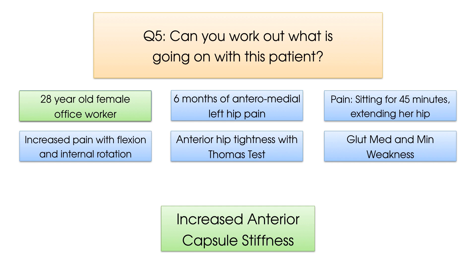Furthermore, weakness in the gluteus medius and minimus muscles can lead to an increase in hip internal rotation, which can also cause a compression of the anterior joint capsule, and explains why internal rotation was painful for this patient. In the end, mobilisations and hip flexor stretches to open up the anterior capsule, along with strengthening of the gluteus medius and minimus muscles, and advising the patient to take regular breaks from sitting at work, all led to an improvement in her symptoms.